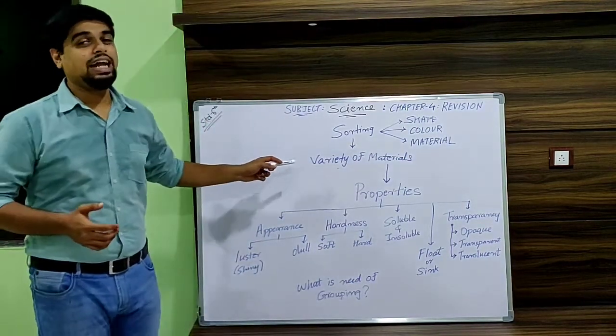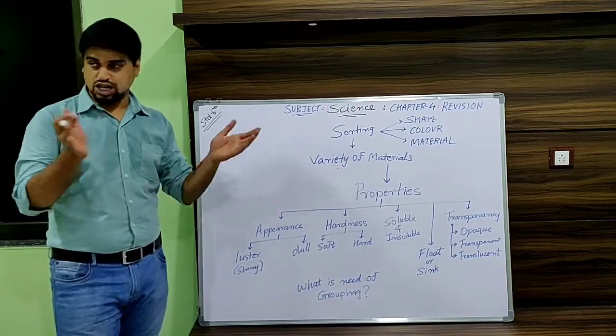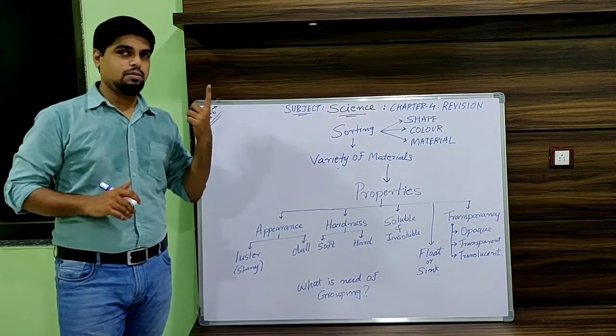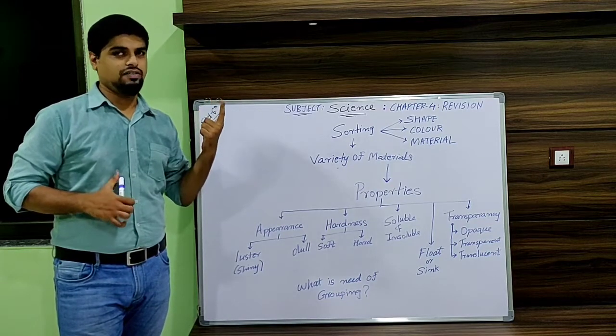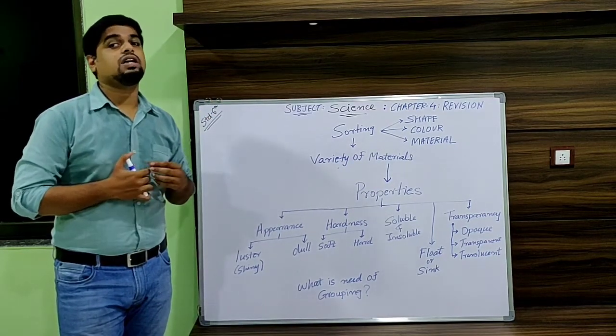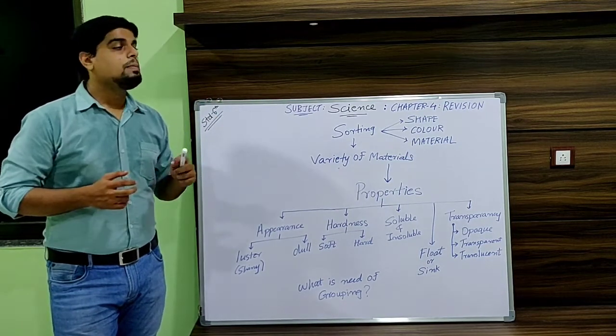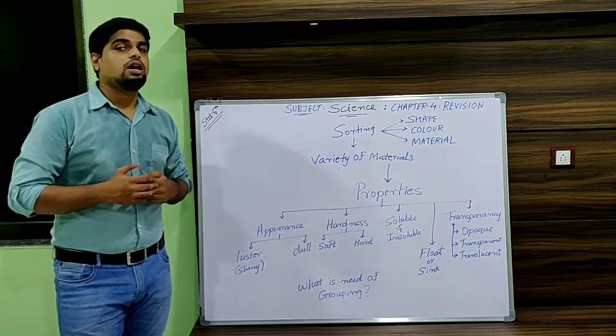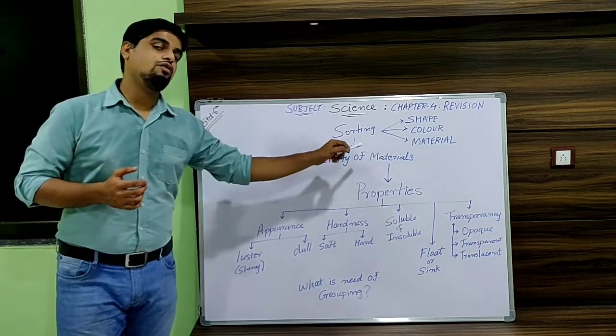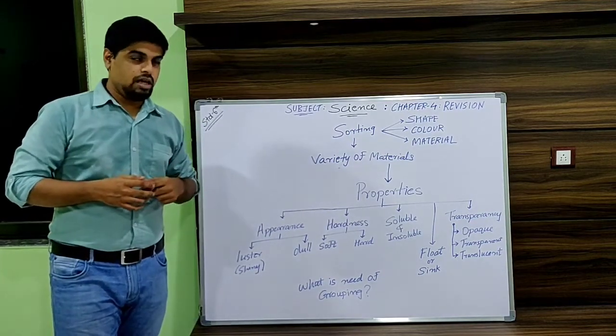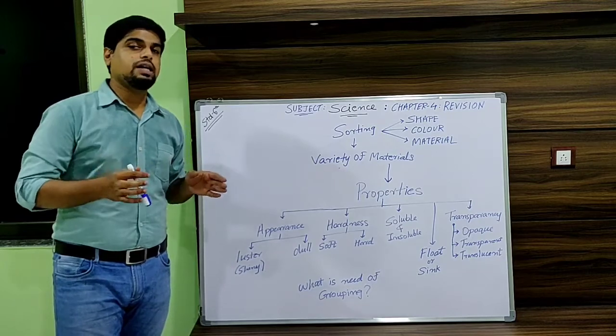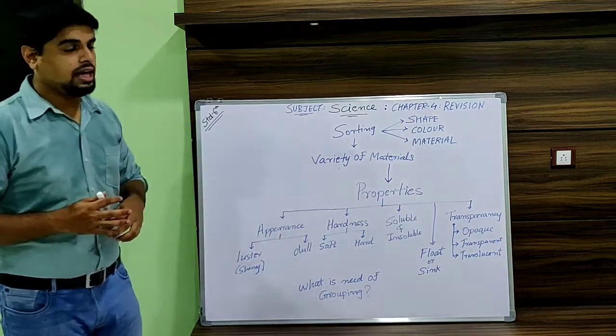Then we have seen varieties of materials or objects around us. As we have seen in chapter number 1, there are varieties of food available. In chapter number 3, we have seen variety of clothing and fabric available. Similarly, in chapter number 4, we are going to learn about variety of materials available.